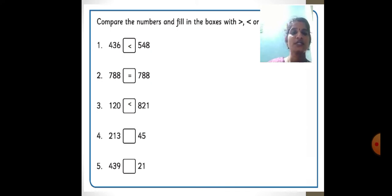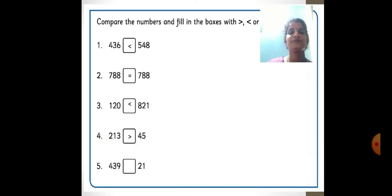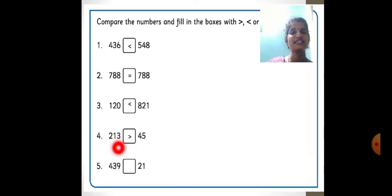Here, 213 and 45. 213 has a hundreds place but 45 has no hundreds, so 213 is the greatest number. Next: 439 and 21. Which one is the greatest? 439 is the greatest number.